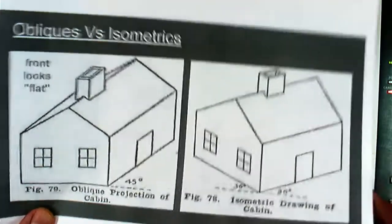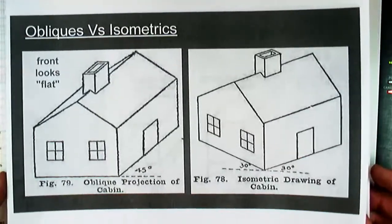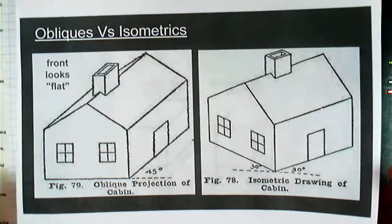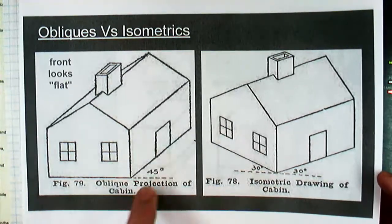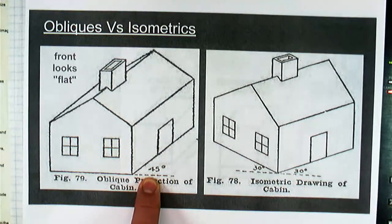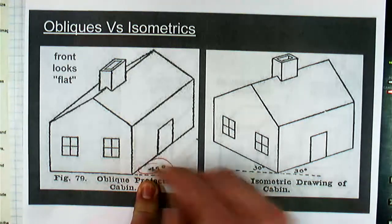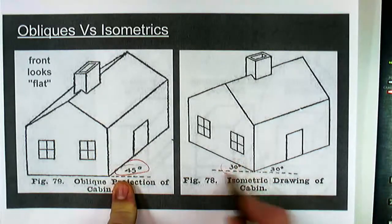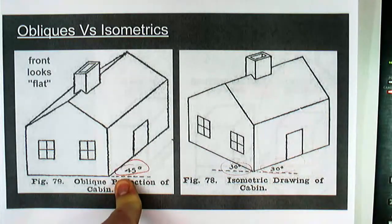So just some things I want to mention before I get started, just to review in case anybody missed it or forgets. Obliques are where we go back at a 45-degree angle versus an isometric where we were using our 30, 60, 90 triangles.